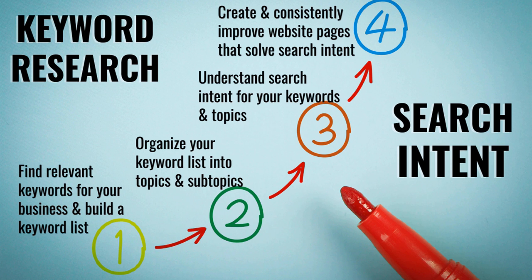My step-by-step keyword research process has basically four steps. First, find relevant keywords and build a keyword list based on products or services you offer. Next, organize your keyword list into topics and subtopics. Then, understand search intent for the different keywords and topics you've come up with. Finally, create and consistently improve website pages that solve for search intent. You might hear me say keyword intent or search intent — those are the same thing: understanding what people are looking for when they enter keywords into a search engine.